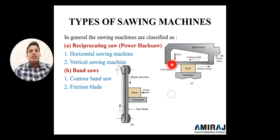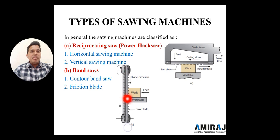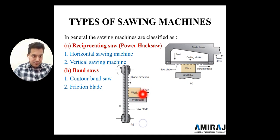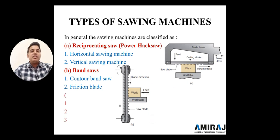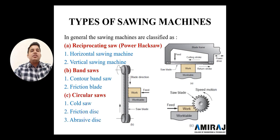Next one is the band saw, which is particularly used for wooden purposes and brittle materials. You can observe there are long strip blades driven by two roller supports. We feed the workpiece from one side where the work table is. It is a continuous blade saw with friction blade cutting.